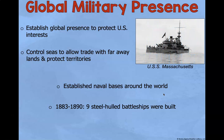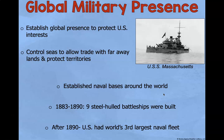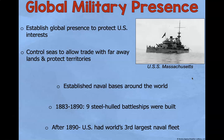Global military presence — what they wanted to do was establish a military presence around the world to protect US interests. By having a global navy, you can control the seas and control trade. It also allows you to trade with faraway lands and protect the territories you've invested in. The United States established naval bases around the world. Between 1883 and 1890, nine steel hull battleships were built. After 1890, the US had the world's third largest naval fleet.